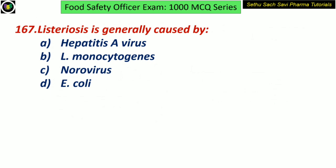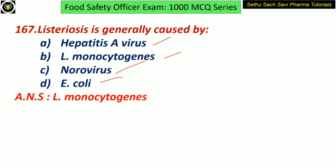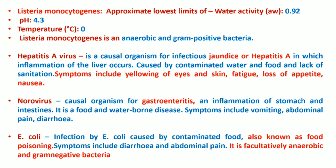Listeriosis — is it generally caused by hepatitis A virus, L. monocytogenes, norovirus, or E. coli? Yes, the answer is L. monocytogenes, which means Listeria monocytogenes. The lowest water activity limit is approximately 0.92, the most ideal pH is 4.3, and the minimum temperature is 0°C. Listeria monocytogenes is a facultative anaerobic gram-positive bacteria.